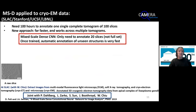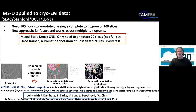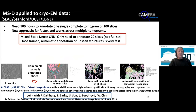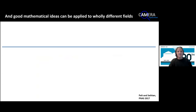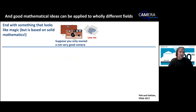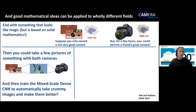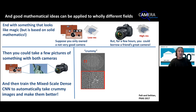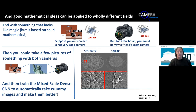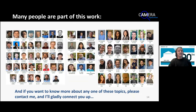In one cryo-EM example, we take a raw slice, manually train on 20 slices, and can pull out 3D reconstructions for many images we've never seen — this was a toxoplasmosis experiment. Good mathematical ideas can also be applied to wholly different fields. Suppose you owned a bad camera but could borrow a really good one. You could take pictures with both, train this technique so that from a crummy image you could rebuild good results — without needing the good camera. This reduces exposure time. Many people are part of this work — contact me and I'd be happy to connect you. Let me turn it back over to Jen.